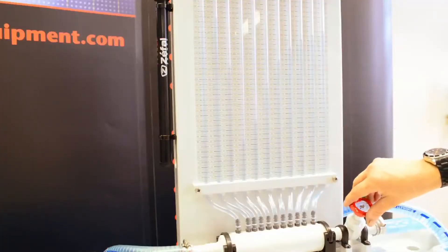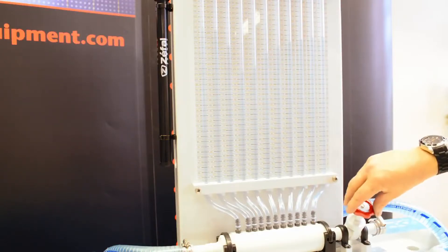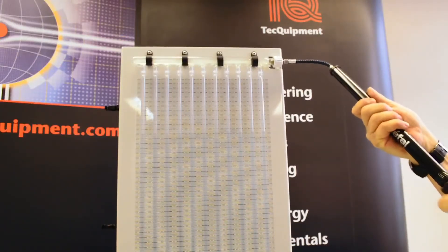along a convergent, divergent passage. A manometer panel holds the manometer tubes vertically. A common manifold above the tubes has an air pressure control valve.